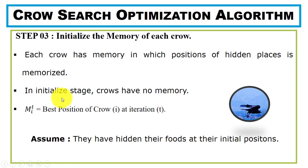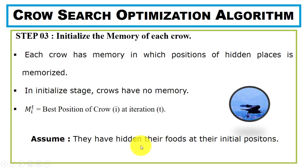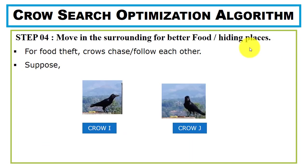We can display the memory using notation where i is the crow number and t is the current iteration. In the initialization stage we assume crows have no memory. We assume they have hidden their food at their initial position. In step 4 we move the crows in the surrounding area to search for better food resources or hiding places.